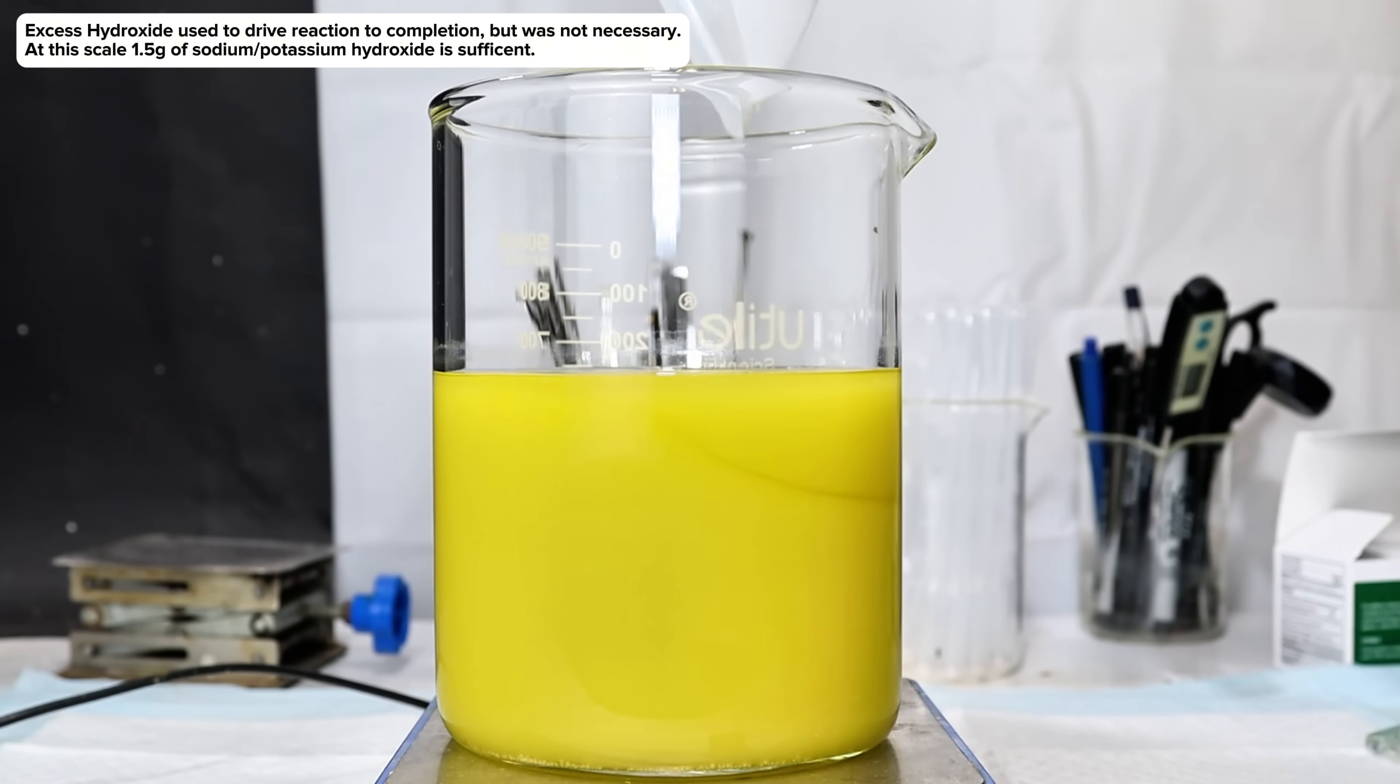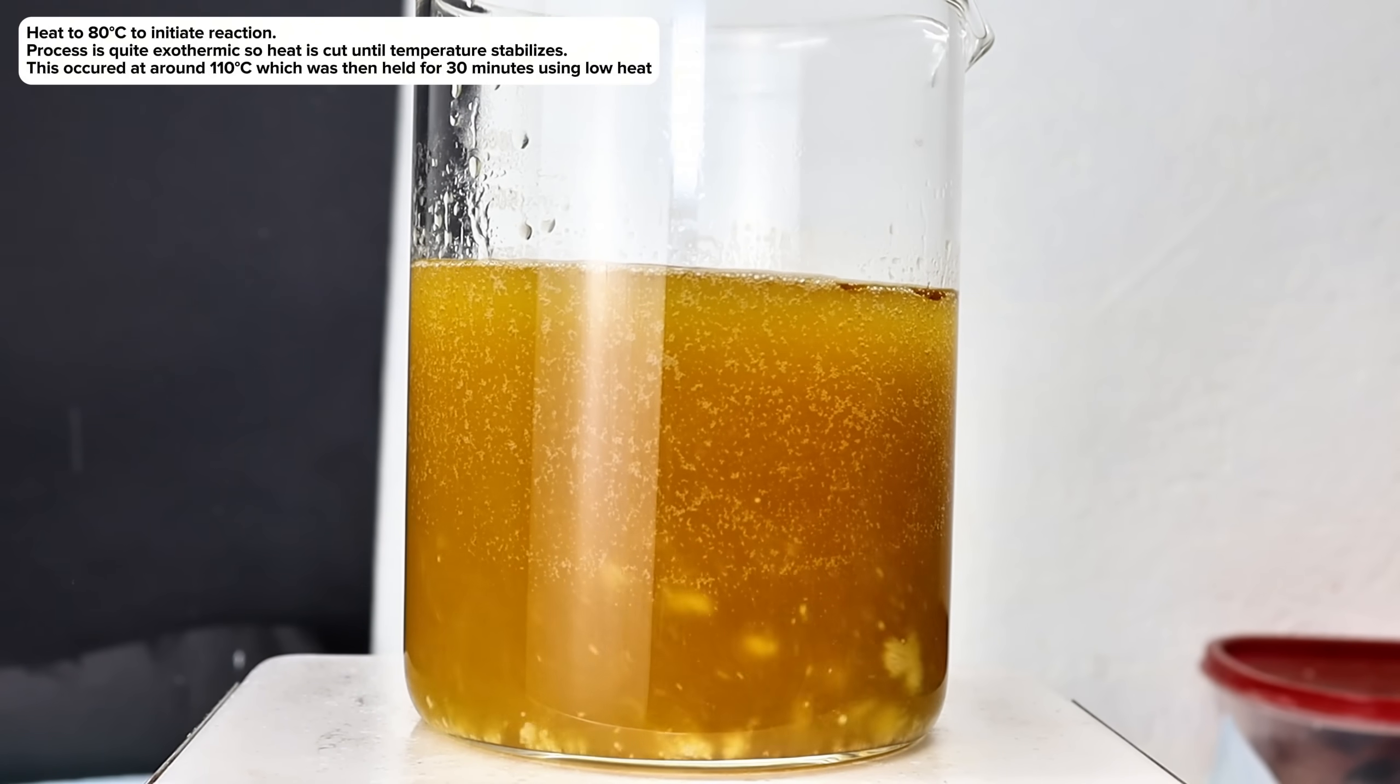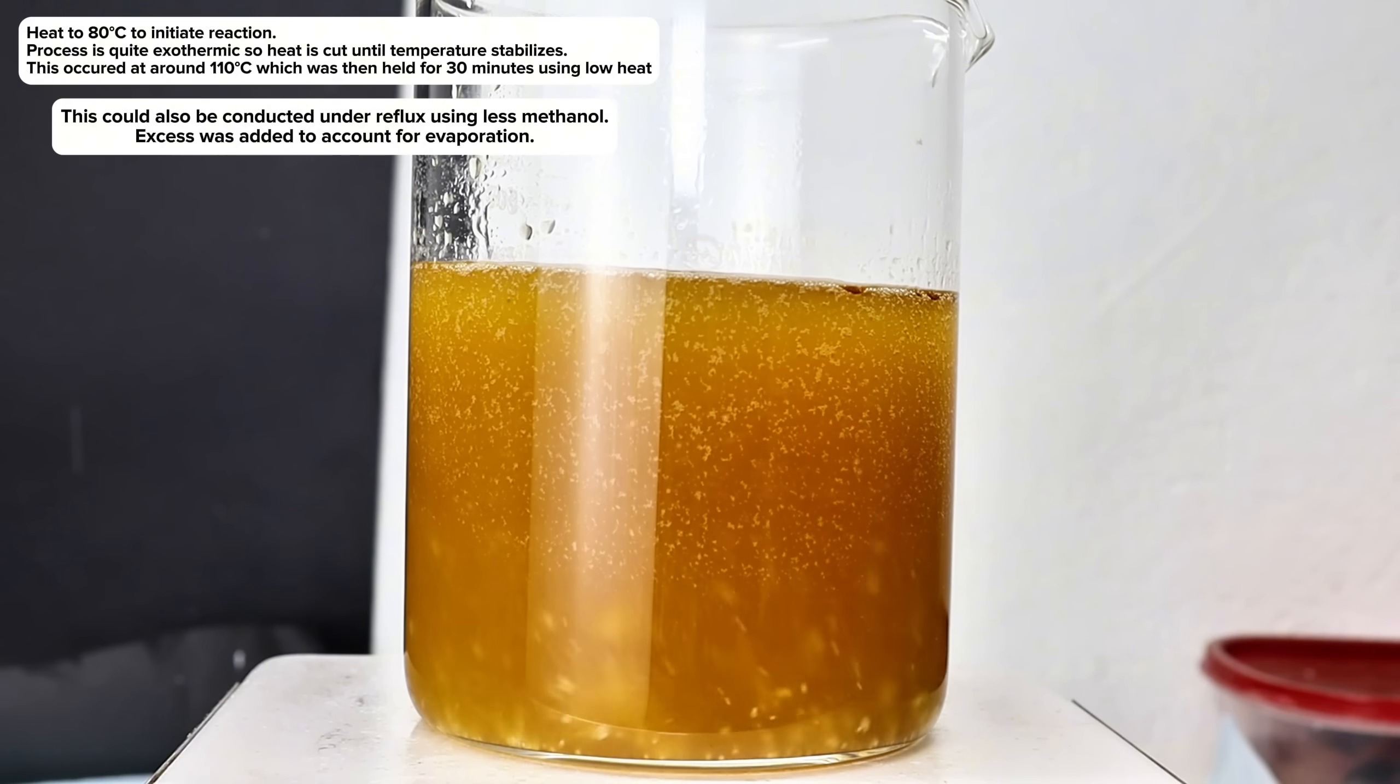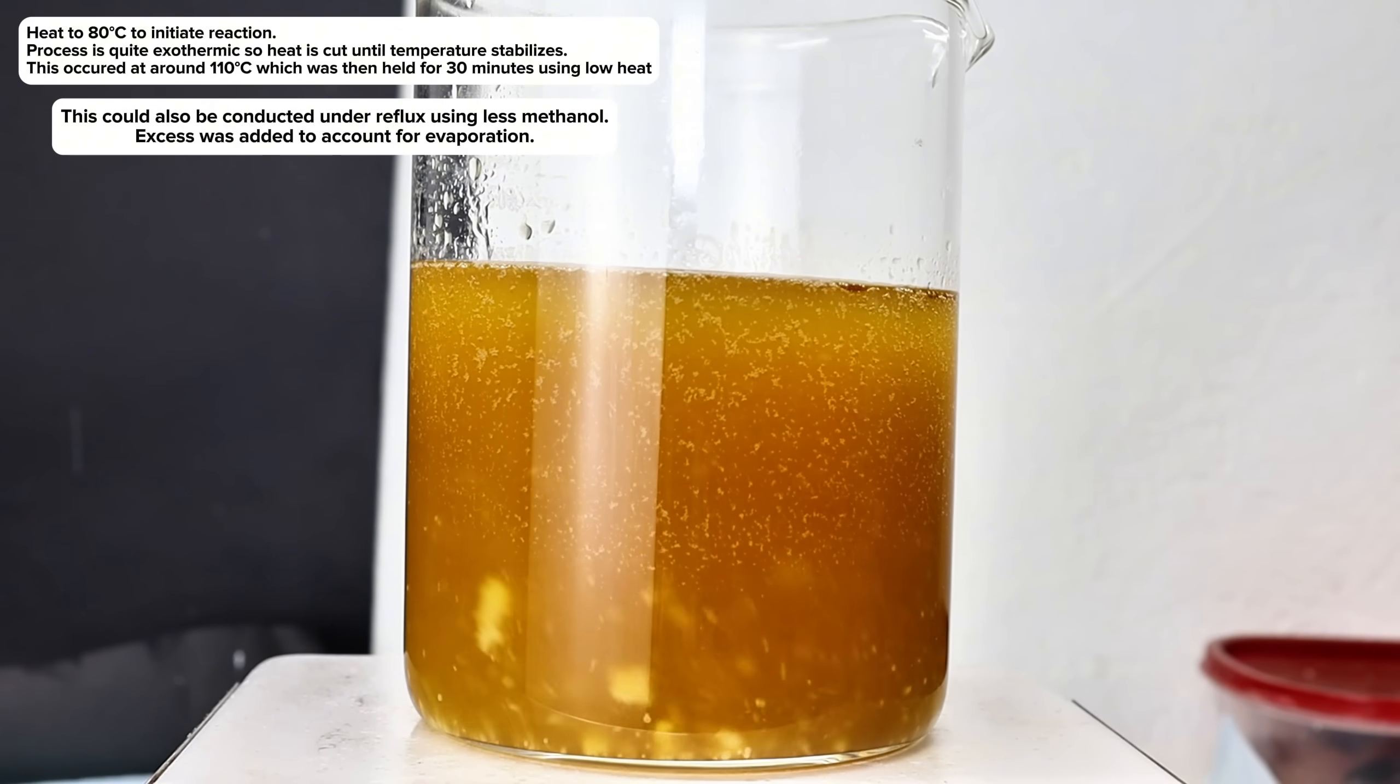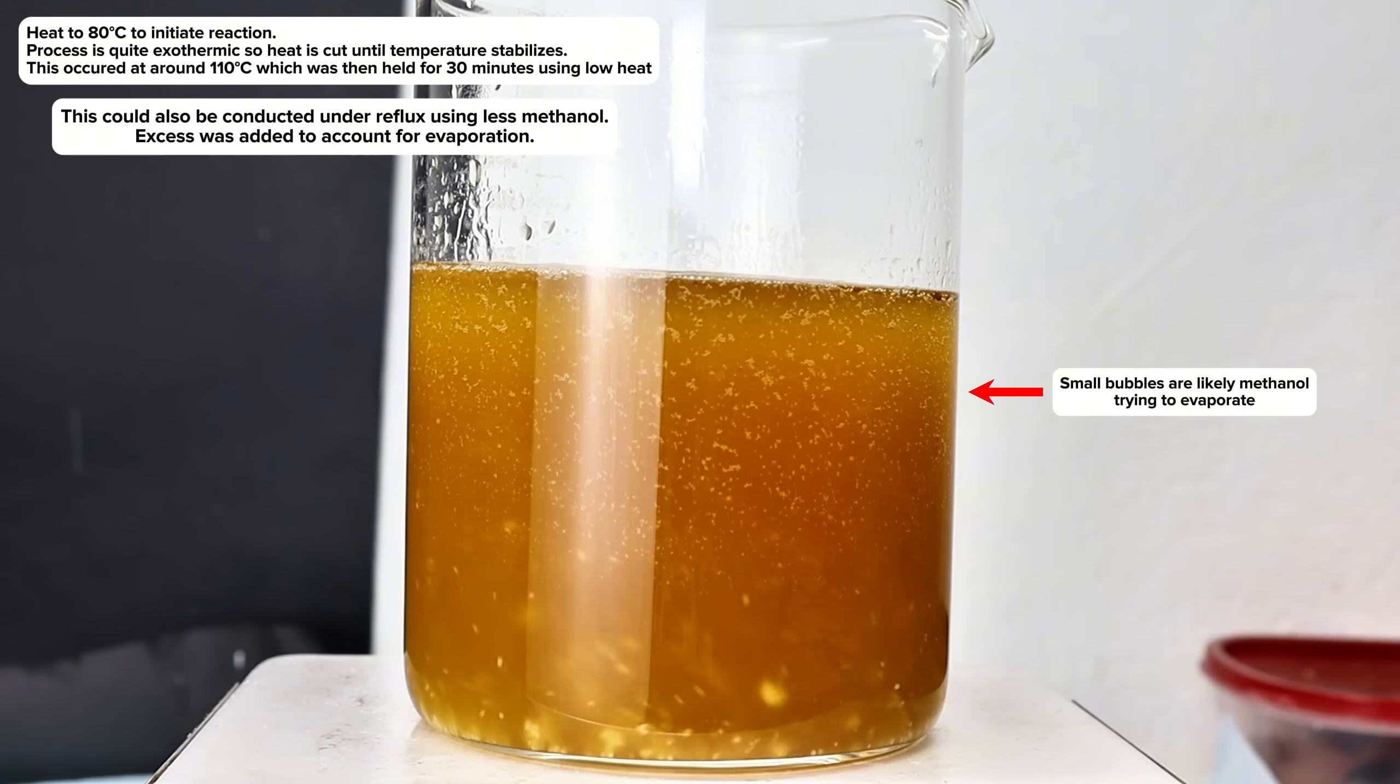The beaker was then transferred to my hot plate and heated to around 80 degrees Celsius, at which point the reaction became exothermic and heating was cut. At around 110 degrees Celsius, the temperature stopped climbing, and so at that point heat was applied for the remainder of the reaction to maintain that temperature.